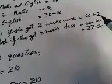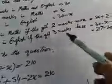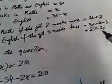If Mathematics marks are 2 more, then it becomes x plus 2. And English marks are 3 less, so it becomes 27 minus x.